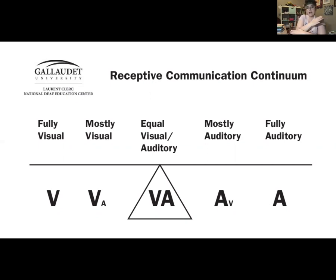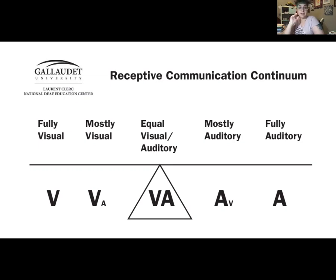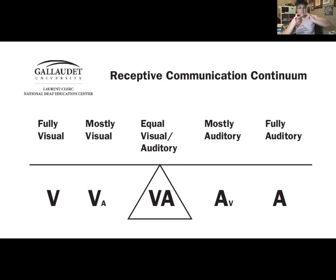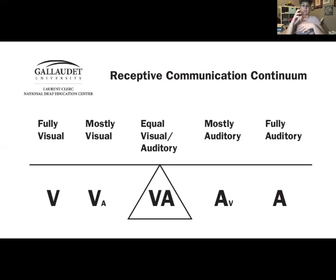Then we move down this continuum to the other opposite end, which would be somebody who is fully relying on hearing — with or without assistive technology — in order to take in information from others. In the middle, we have a student who would be equally or balanced with their receptive input. If we're working with a student who's in the middle, we would want to make sure that we are simcomming so that they're able to take in both visual and audio stimulus.